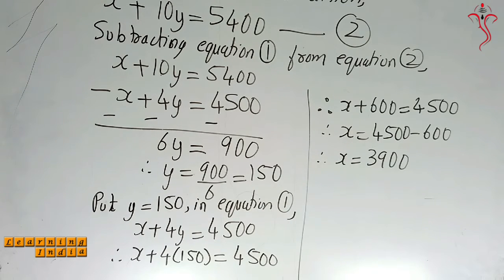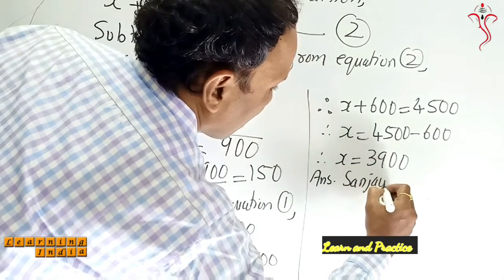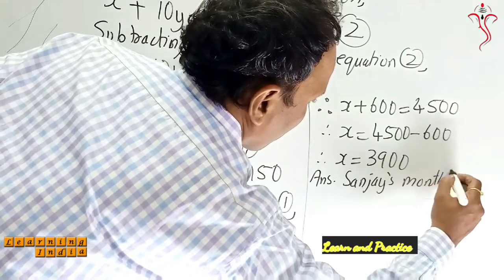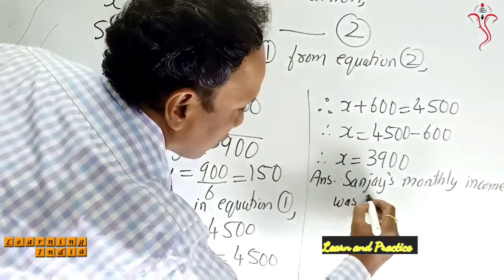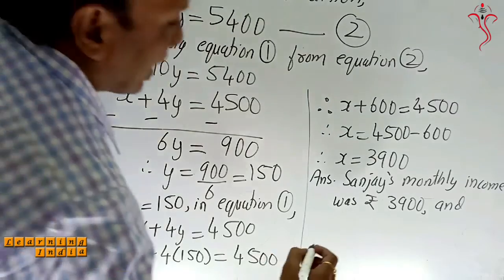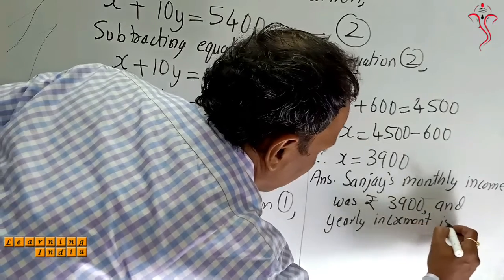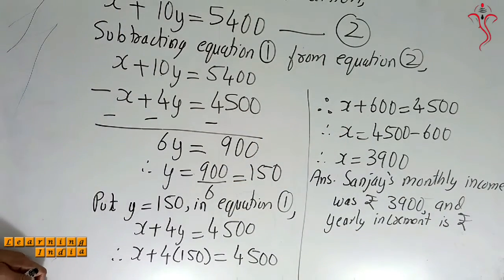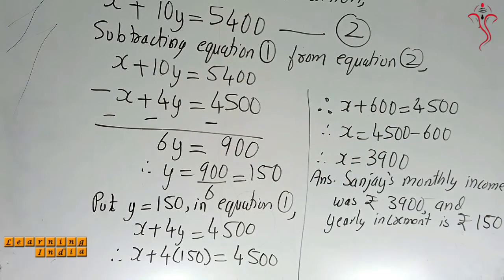So we got the value of X as 3900. X was Sanjay's monthly income, so now we can write the final answer. Sanjay's monthly income was rupees 3900, and the yearly increment in salary was rupees 150 — that is the value of Y we obtained.